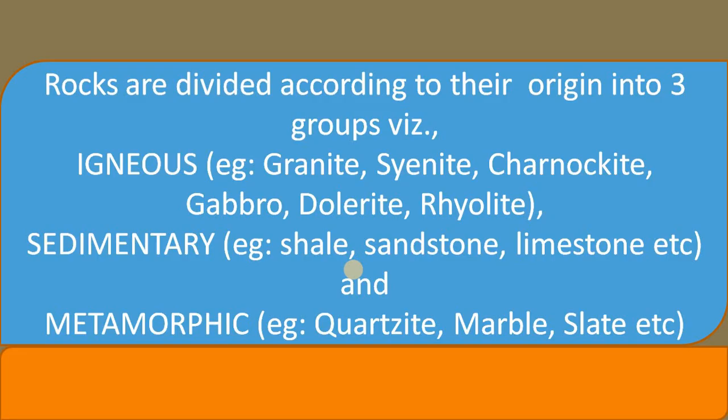We know very well that rocks are divided into three groups based on their origin, namely the igneous rocks — for example, granite, cyanite, charnakite, gabbro, joelanite, rhyolite — all these rocks belong to the group of igneous rocks.